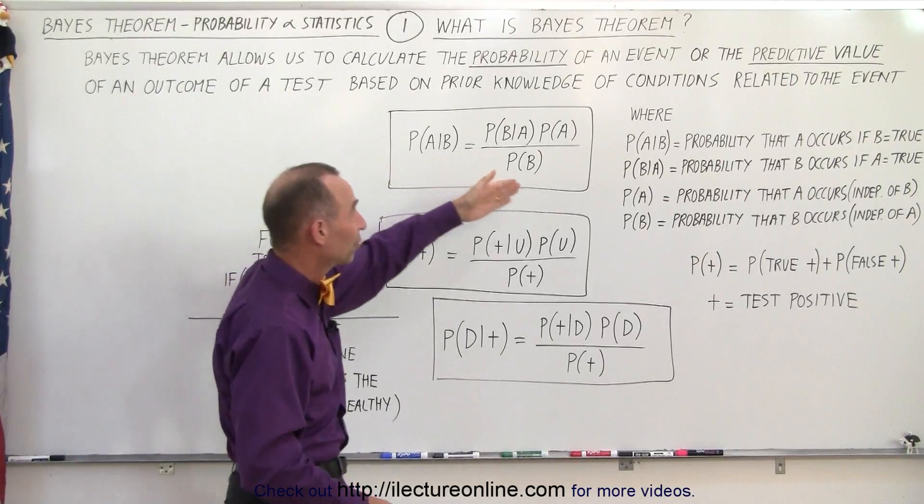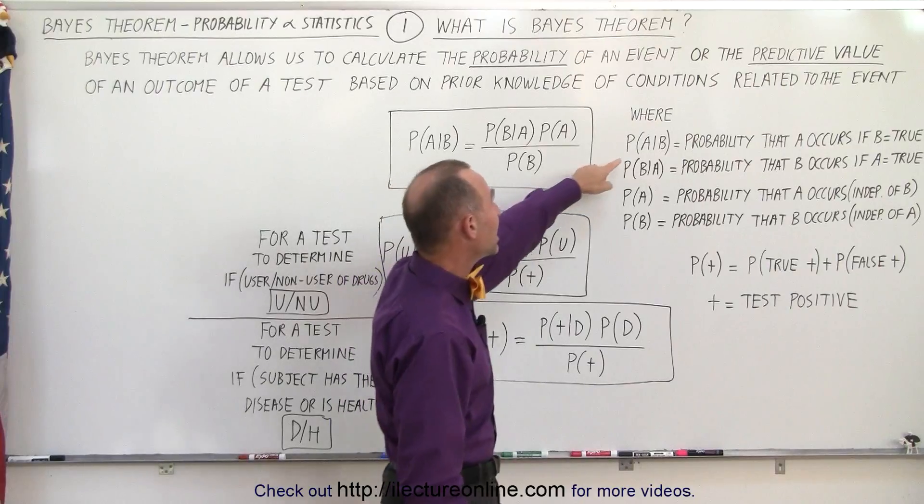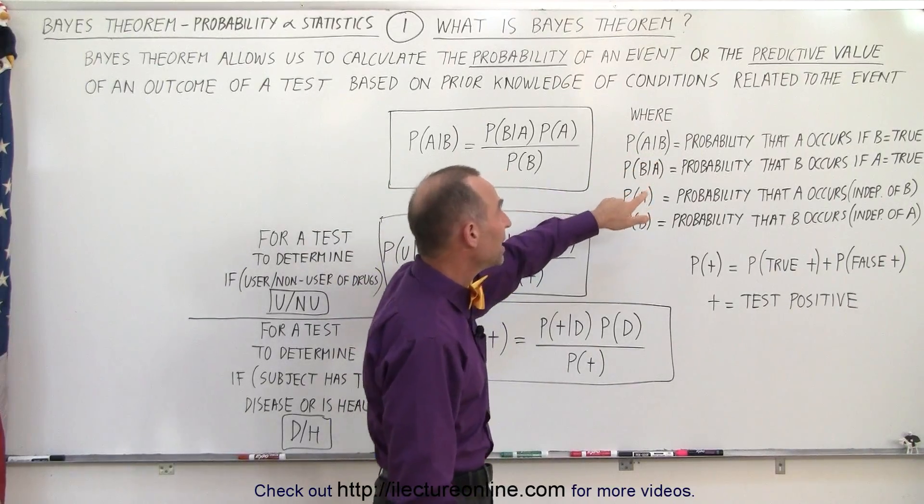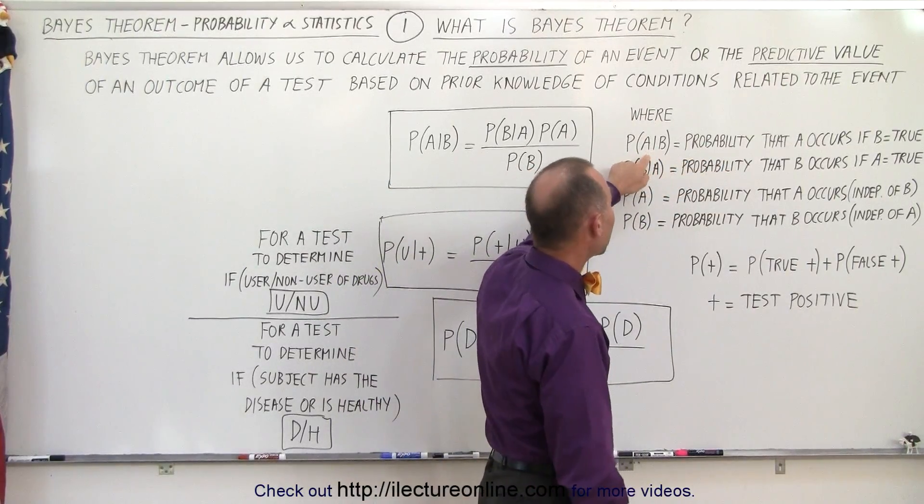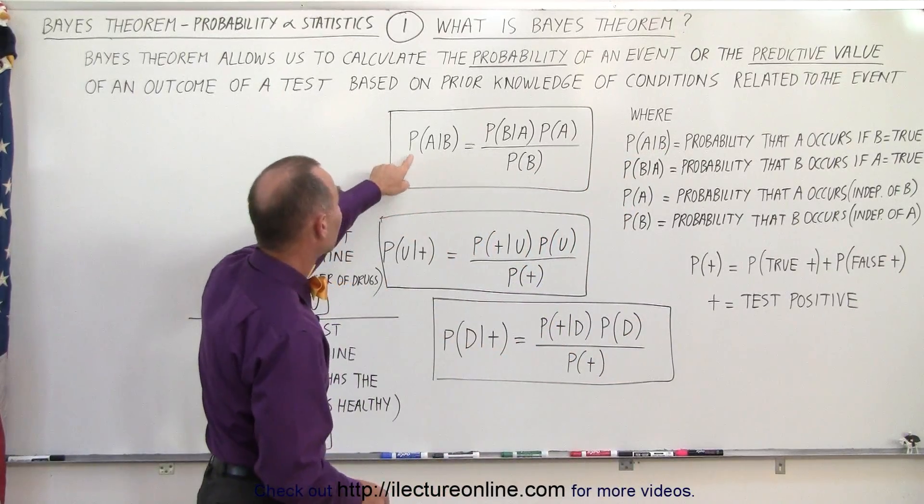It tells us here, and of course here we have what these things mean, what the symbols mean. P(A|B), what does it mean? It's the probability that A occurs if B is true.